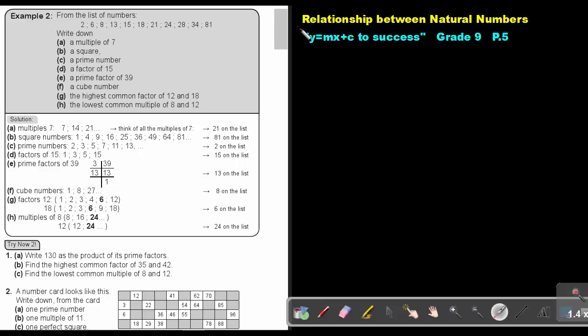Part 3. We are going to continue with the relationship between natural numbers. You will find this on page 5 in the Namibia Mathematics Grade 9 textbook, Y equals MX plus C to success.